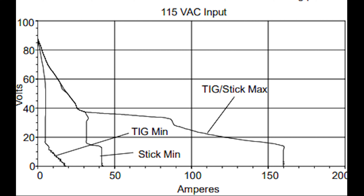Here we have a 150-amp stick and TIG welder, and the curve is pretty abysmal. Below 50 amps it can maintain almost 40 volts, but at the 100-amp range it's dipped down to about 30 volts. This is a prime example of a power source that cannot run 6010 because it cannot produce enough voltage to keep an arc lit. It would run 7018 and 6013 just fine, and it would also wire-weld okay — around 100 amps it would be capable of MIG welding, though the below-20-volt output is a little low.